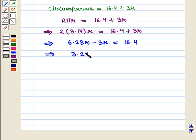This implies that 3.28R is equal to 16.4, which further implies that R is equal to 16.4 divided by 3.28. Since 3.28 times 5 equals 16.4, this implies that